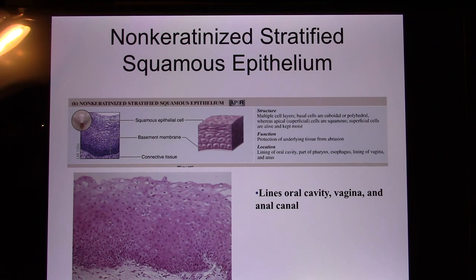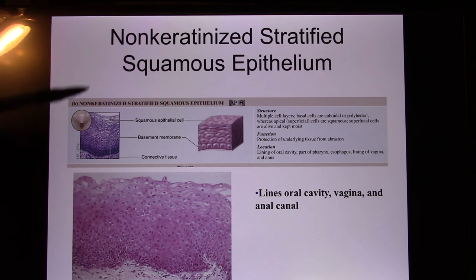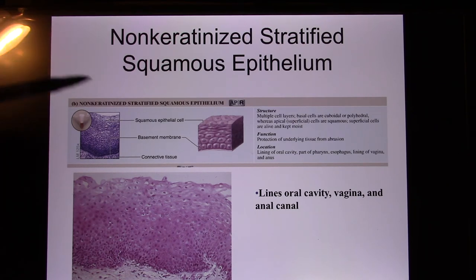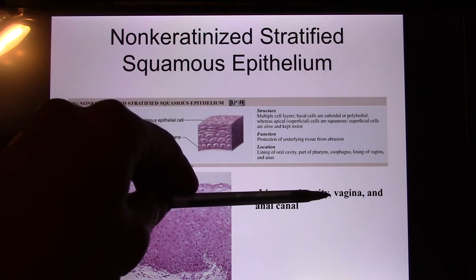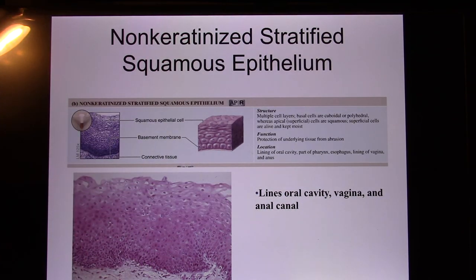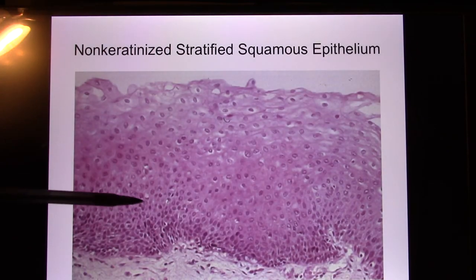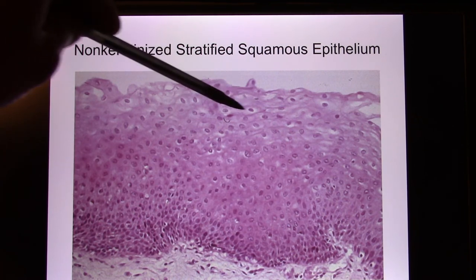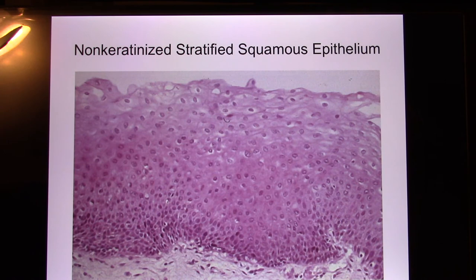Next: non-keratinized stratified squamous epithelium — multiple layers, flat cells. This is found in body parts that need protection but do not need to worry about water loss. Keratin, like a wax particle, prevents water loss, so these areas don't need it. You find non-keratinized stratified squamous in the oral cavity, vagina, and anal canal. On a slide it appears as multiple flat layers.